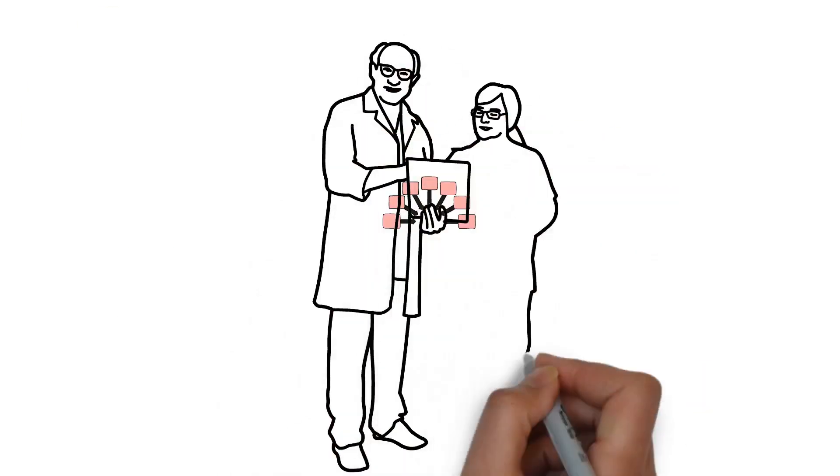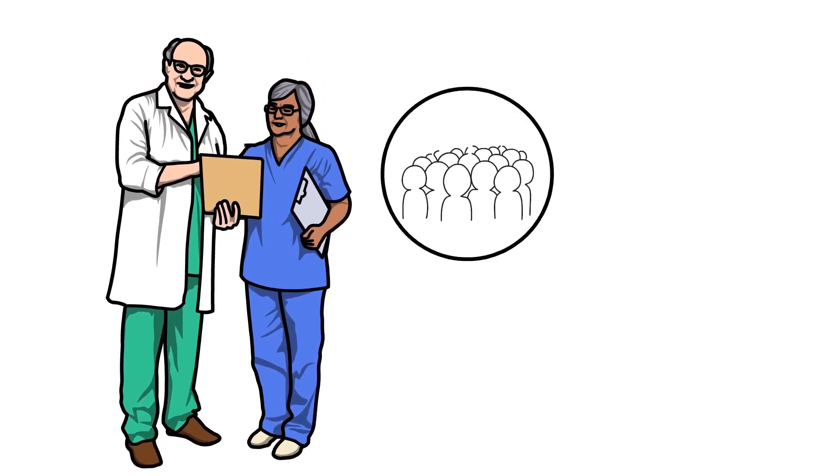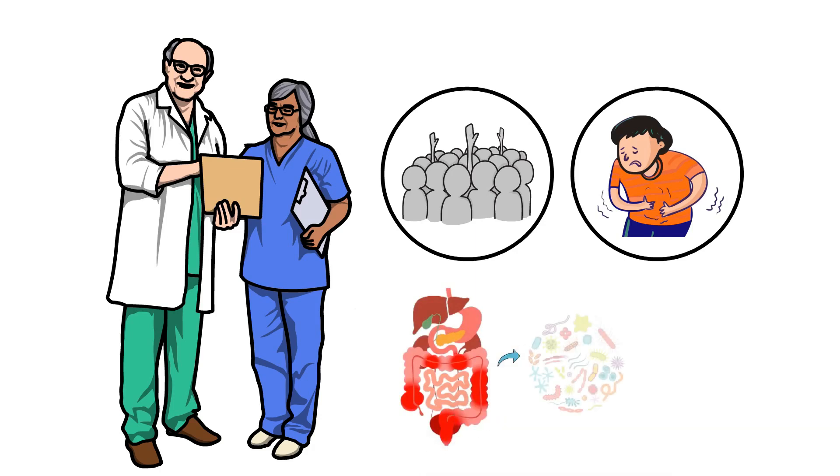There are several factors that scientists and medical professionals believe can contribute to its development. Around 3 in 20 people with Crohn's also have a close relative that suffers with IBD. It is thought that the most likely trigger for Crohn's to develop is a bacteria or virus. However, it is not clear exactly which specific bacteria or virus.